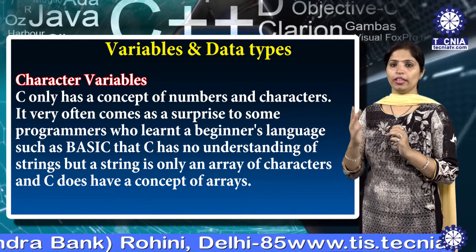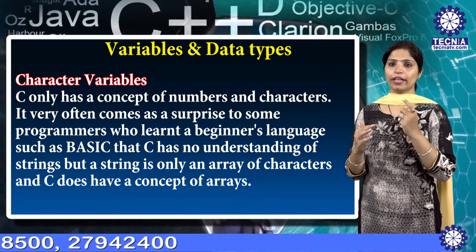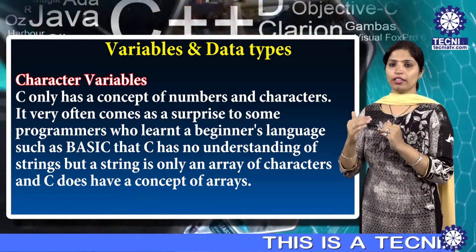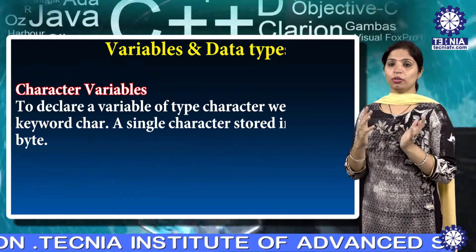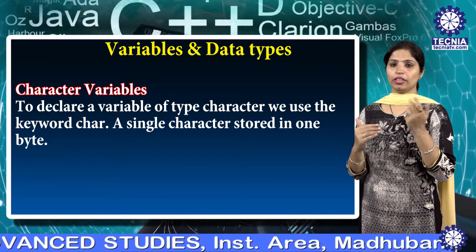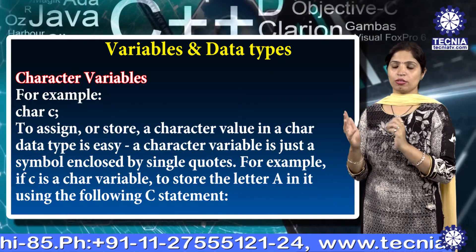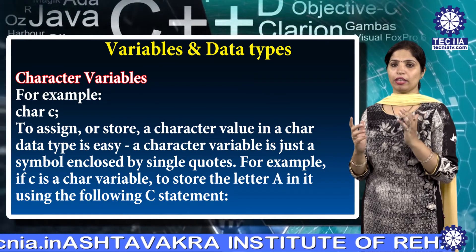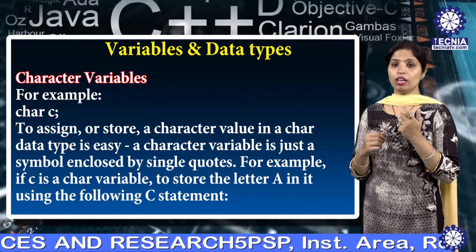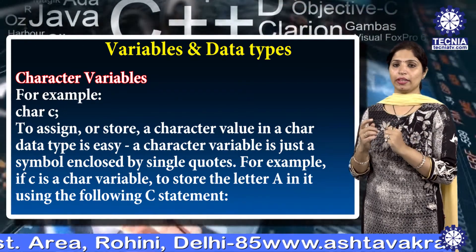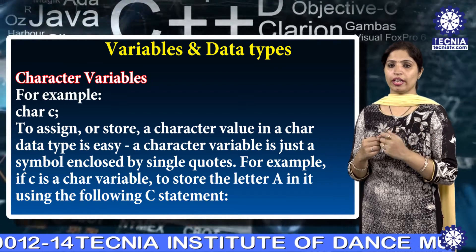Next is the character variable. C only has a concept of numbers and characters. It may surprise some programmers who learned a beginner language like Basic that C has no understanding of strings, but a string is only an array of characters and C has the concept of an array. To declare a variable of type character, we use the keyword char. A single character is stored in one byte. For example, char c. To store a character value, a character variable is just a symbol enclosed in single quotes — for example, to store the letter a, write c = 'a'.